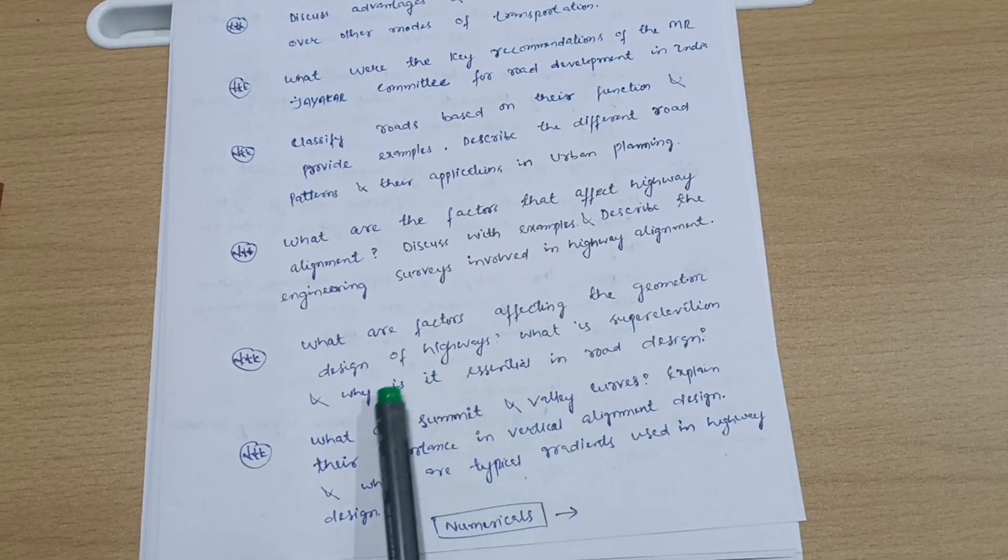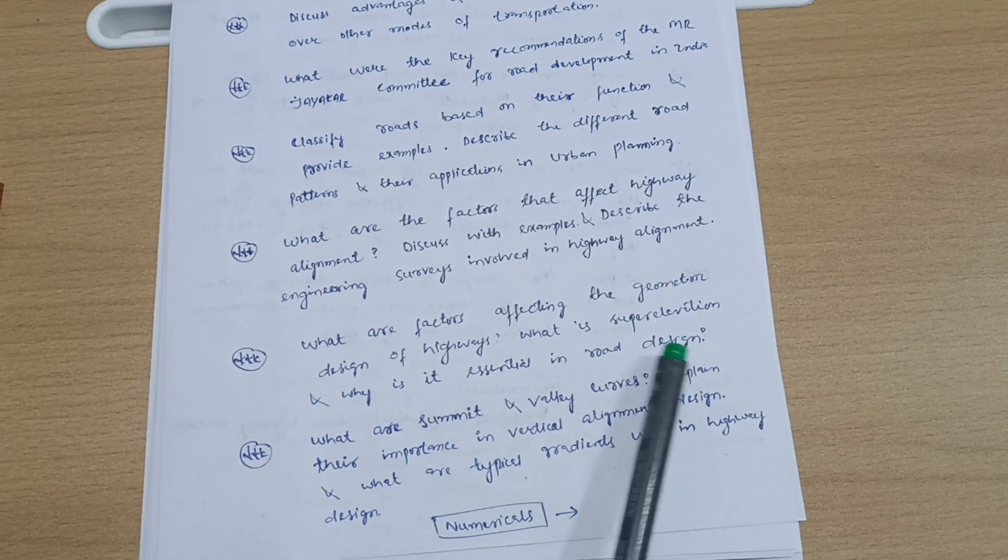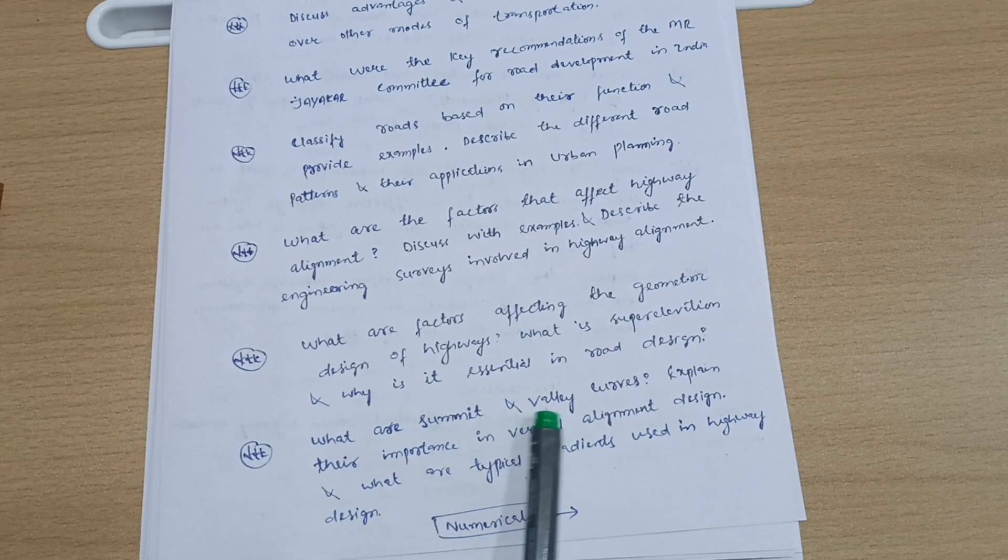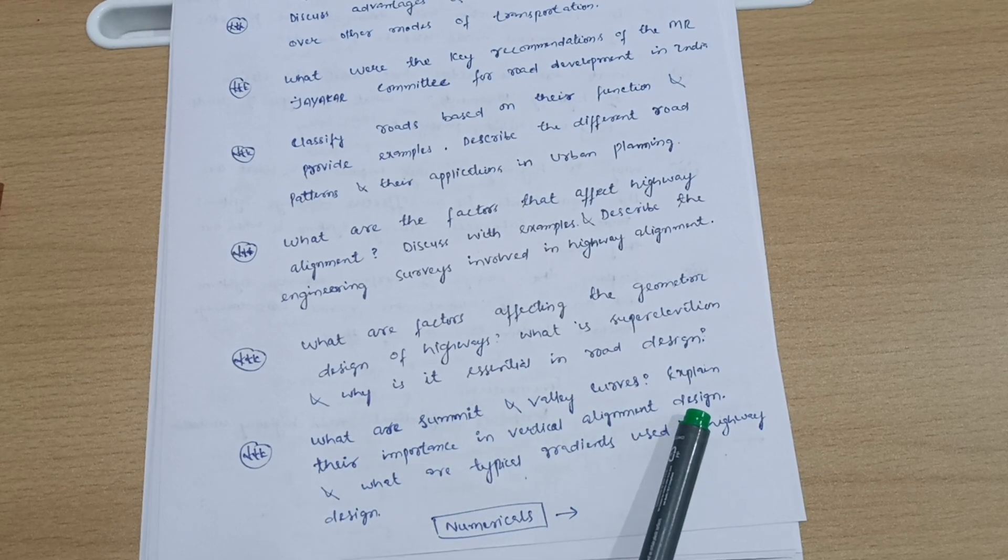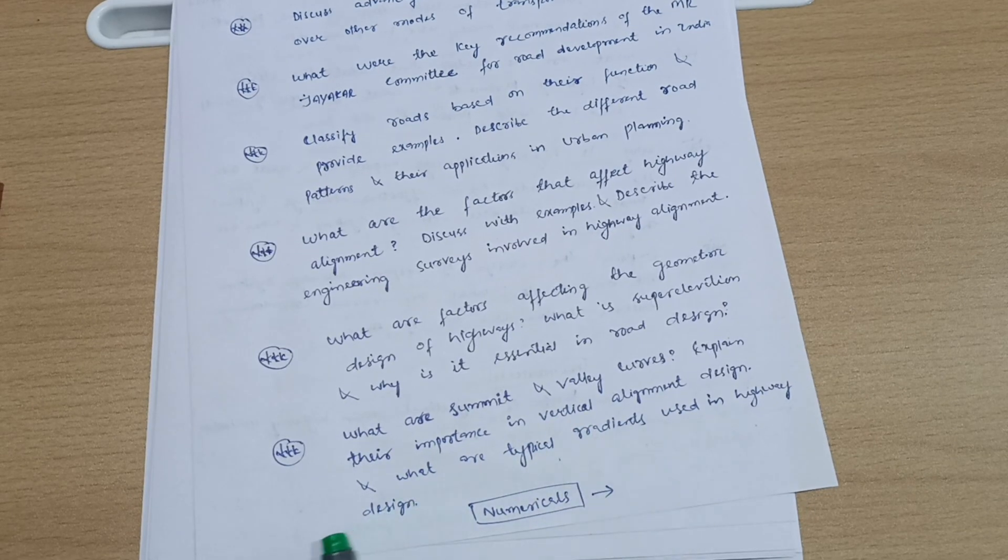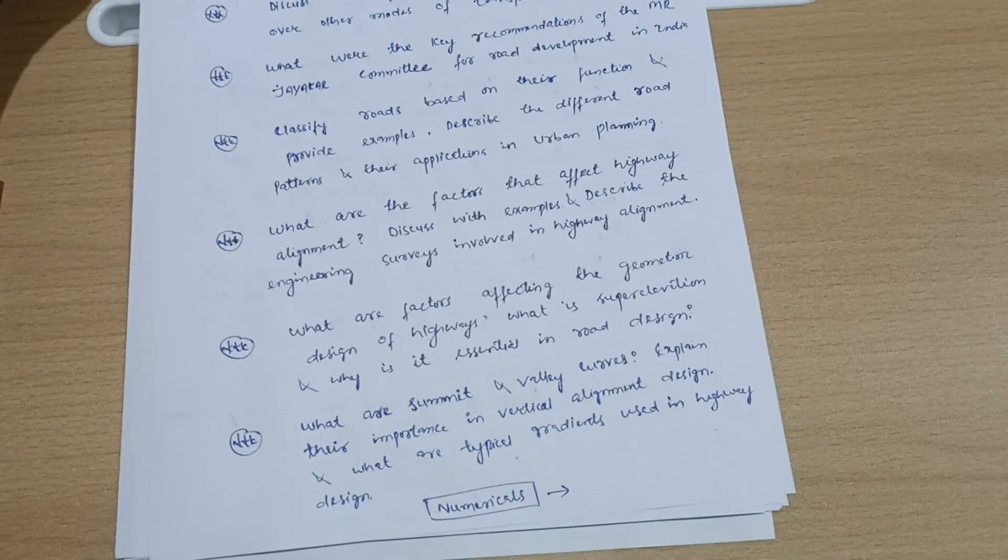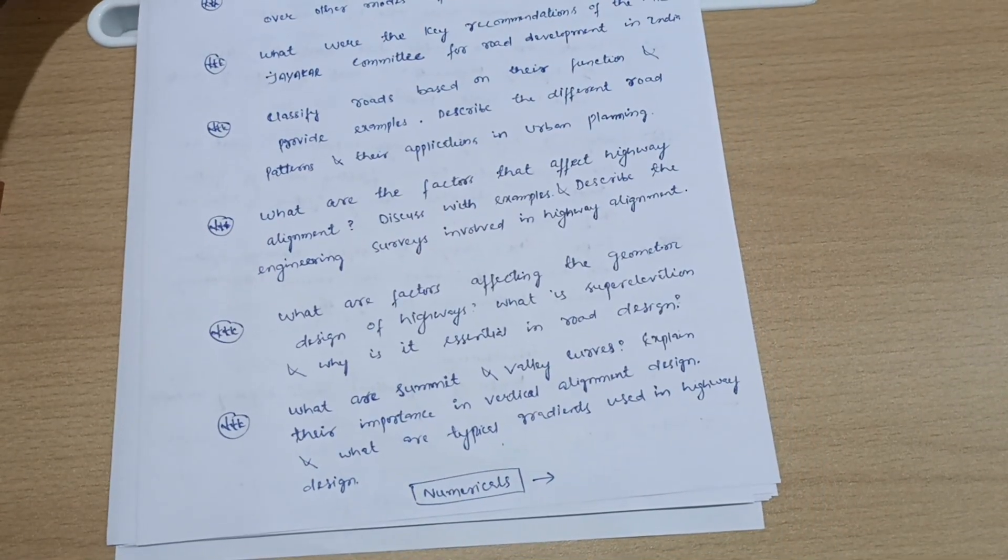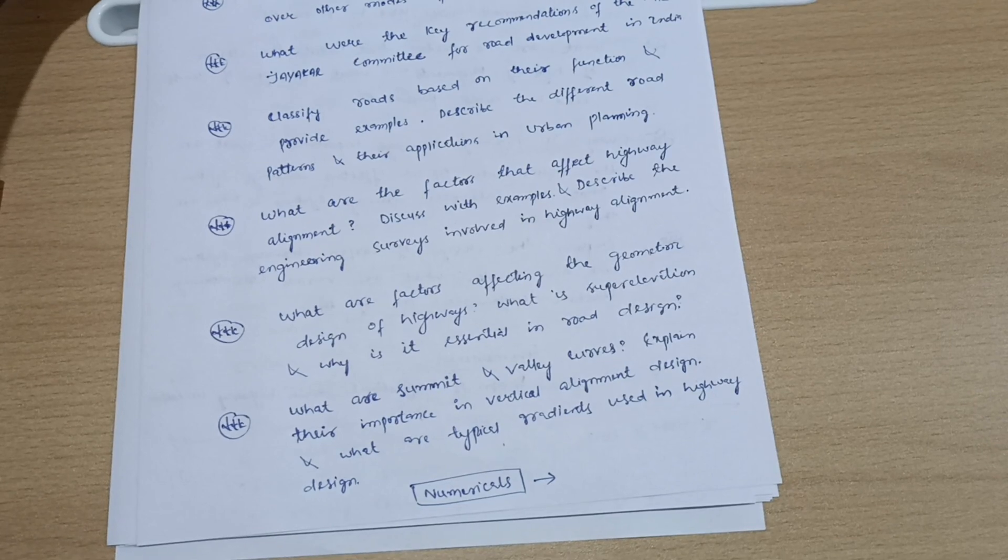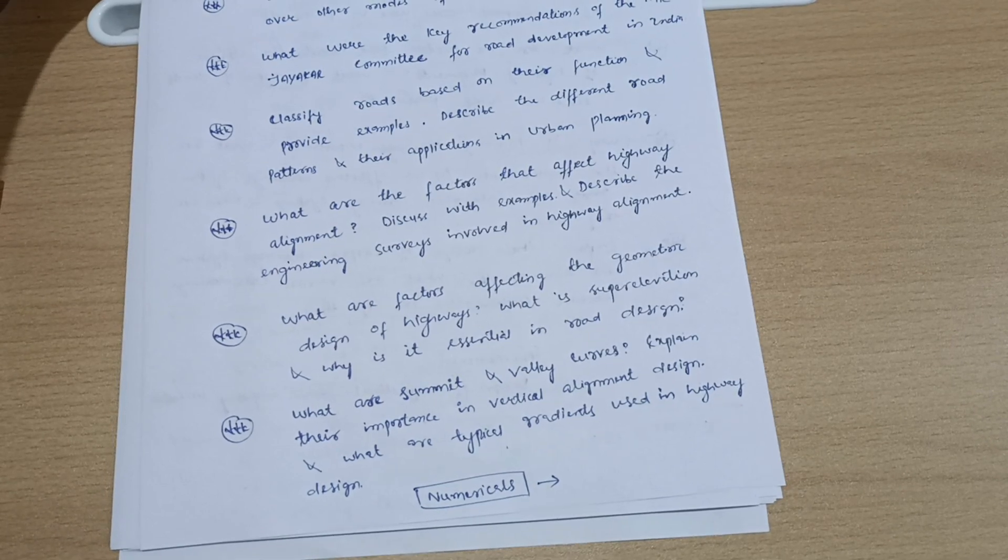What are factors affecting the geometric design of highways? What is super elevation and why is it essential in road design? What are summit and valley curves and explain their importance in vertical alignment design? What are the typical gradients used in highway design? These are seven questions which you have to go through and cover from module first. If you are convenient with the numerical part, go through the numericals. You can refer the 18 scheme and 21 scheme papers also for numerical part, and also your model question paper which VTU has released.